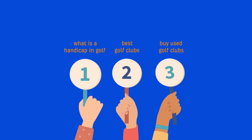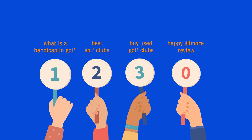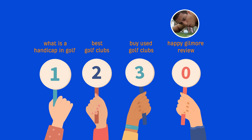Anything with a score of 0 is probably worth ignoring because it's not going to impact your bottom line. Something like 'Happy Gilmore Review' would have a business value of 0 because it has nothing to do with your business other than the fact that it's a fantastic movie about golf.